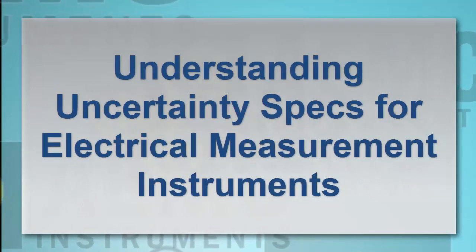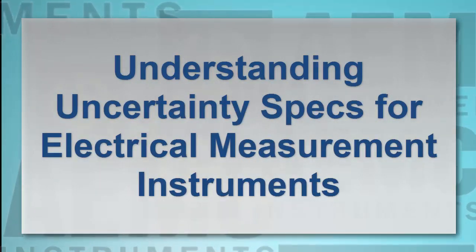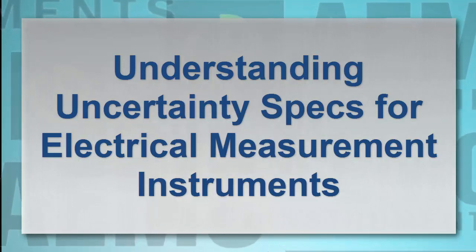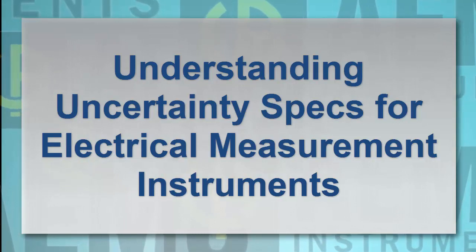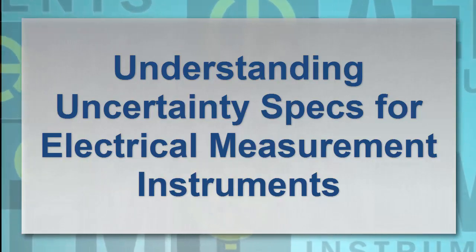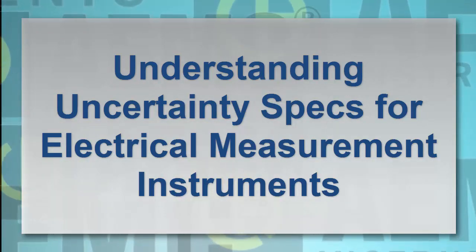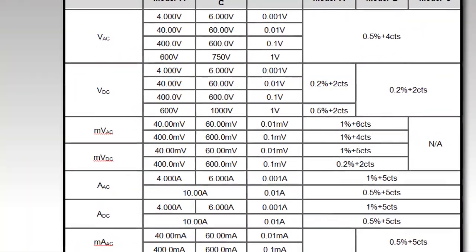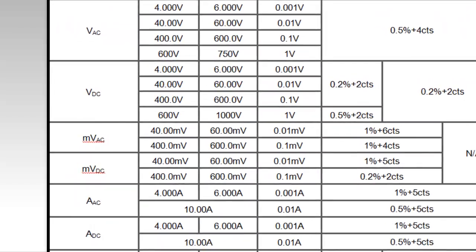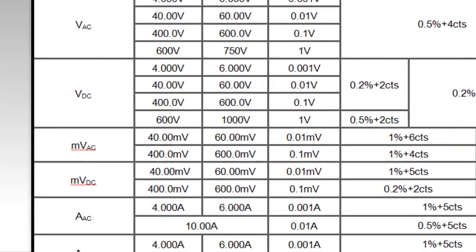A critical characteristic of any measurement instrument is its accuracy—in other words, how closely the instrument's reading reflects the true value being measured with a minimum of uncertainty. The lower the uncertainty, the more confidence we have that this reading is accurate and reliable. Unfortunately, the relevant specifications for electrical measurement equipment are often expressed in terms unfamiliar to less experienced users.